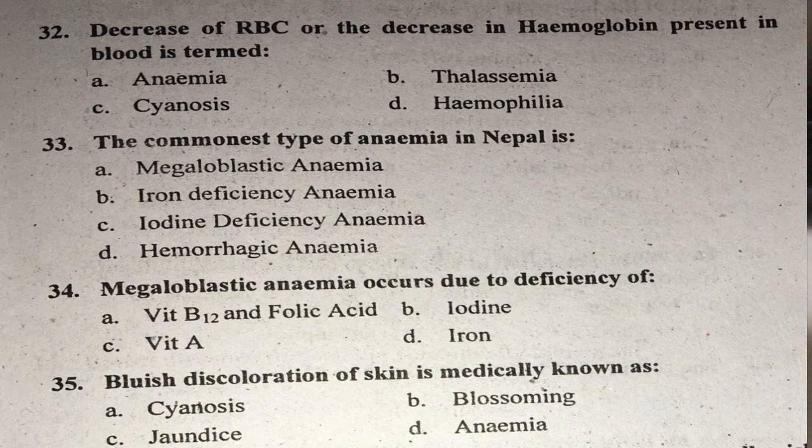Question thirty-three: The commonest type of anemia in Nepal is what? The commonest type of anemia in Nepal is iron deficiency anemia. Right answer is B — iron deficiency anemia.